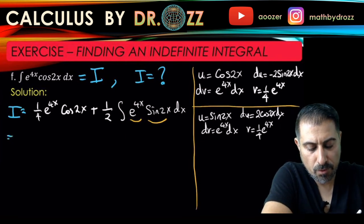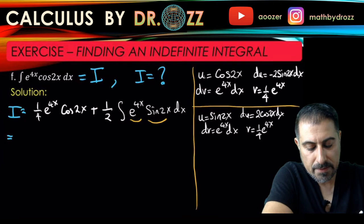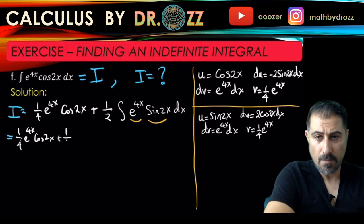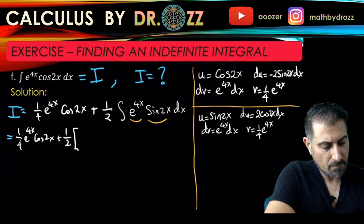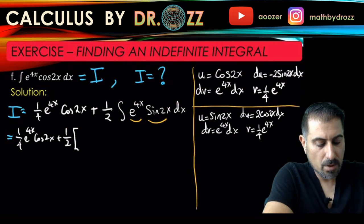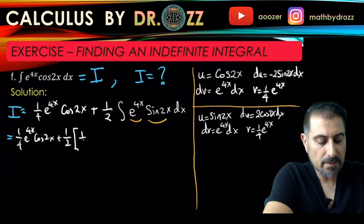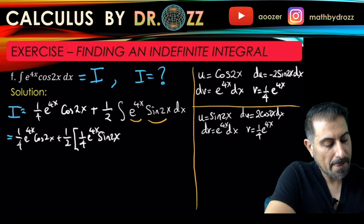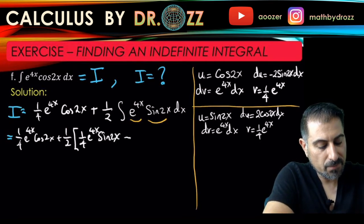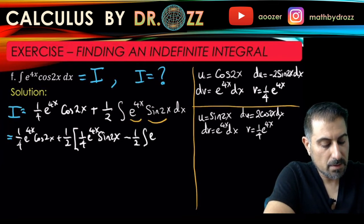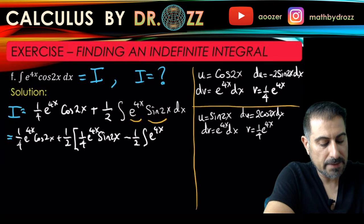I want to put everything now in the bracket. Alright, u times v - one-fourth e to the 4x sine 2x minus v du, that is minus one-half e to the 4x cosine 2x dx.